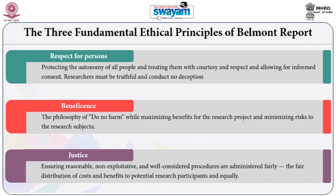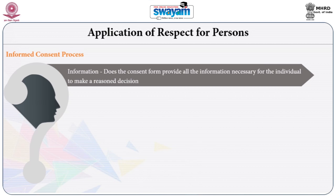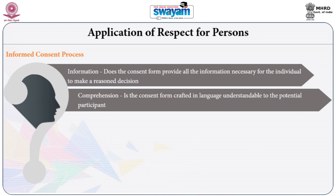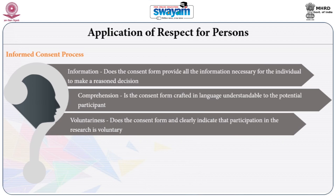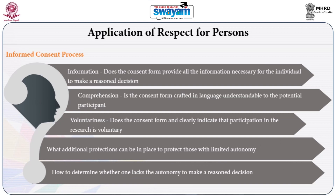Let us look into these three fundamental ethical principles of the Belmont Report in detail. Application of Respect for Persons requires an informed consent process covering: Information — ensuring the consent form provides all information necessary for the individual to make a reasoned decision; Comprehension — that the consent form is crafted in language understandable to the potential participant; and Voluntariness — ensuring the consent form clearly indicates that participation in the research is voluntary.